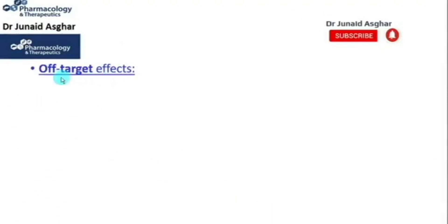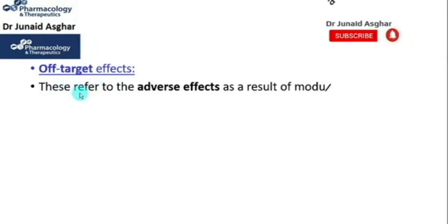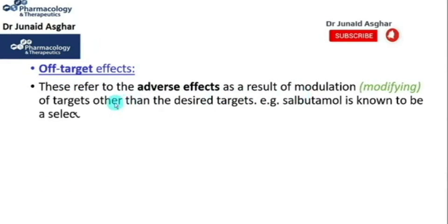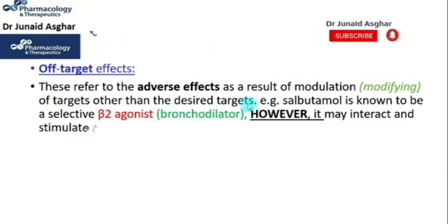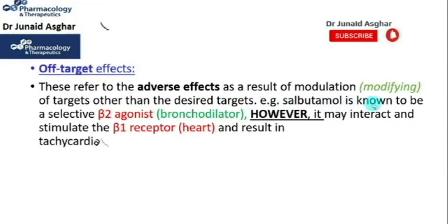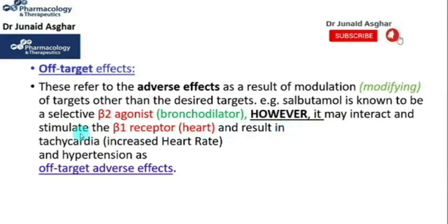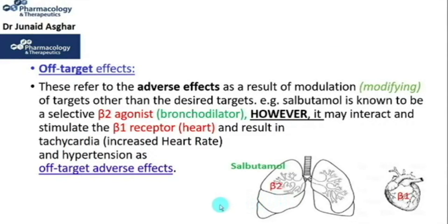Off-target effects refer to adverse effects resulting from modulation of targets other than the desired targets. For example, salbutamol is known to be a selective beta-2 agonist and a well-known bronchodilator drug. However, it may interact with and stimulate the beta-1 receptor present in the heart, and as a result could lead to tachycardia and hypertension as off-target adverse effects.